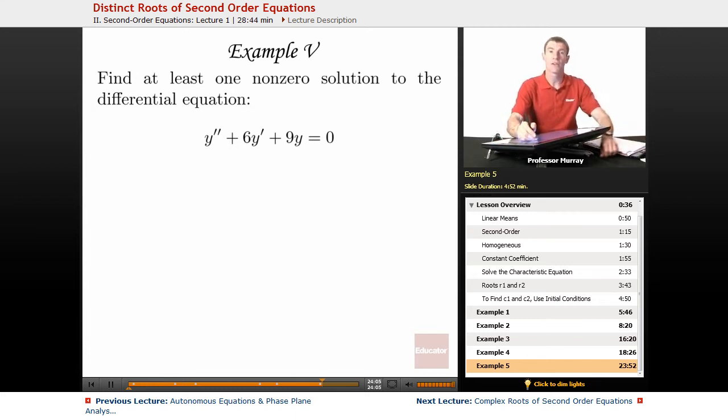Just like all the others, we start out with a characteristic equation, so that means we convert the y's into r's and the derivatives into exponents, so r squared plus 6r plus 9 is equal to zero.